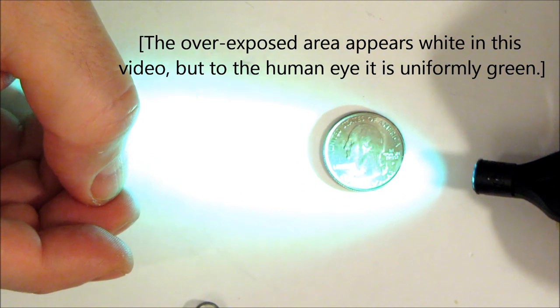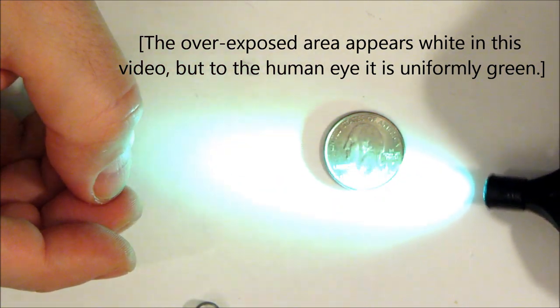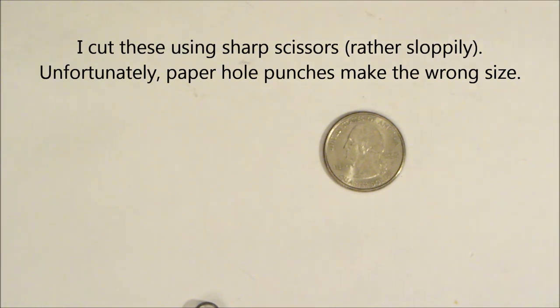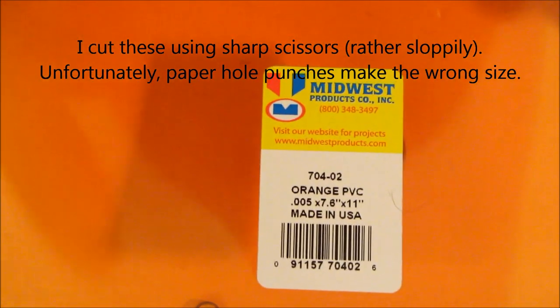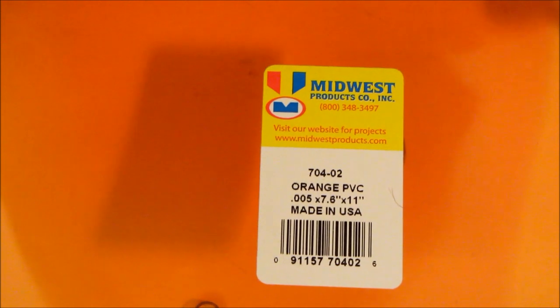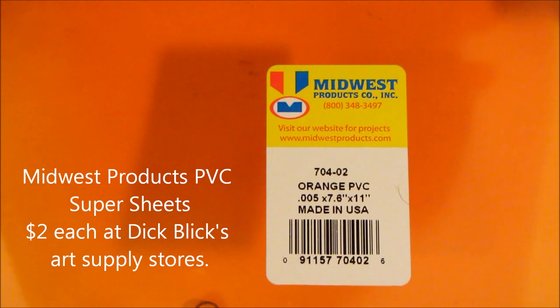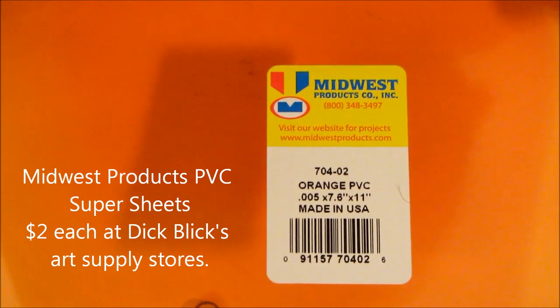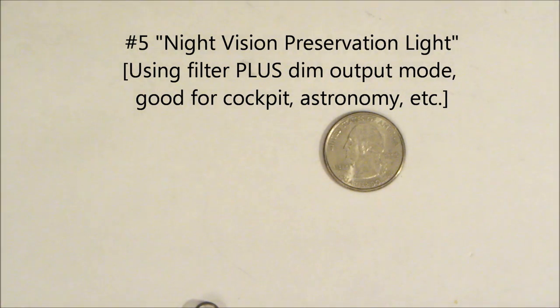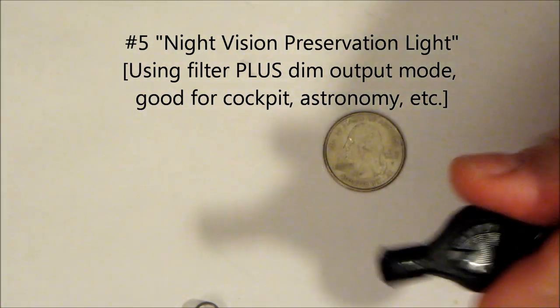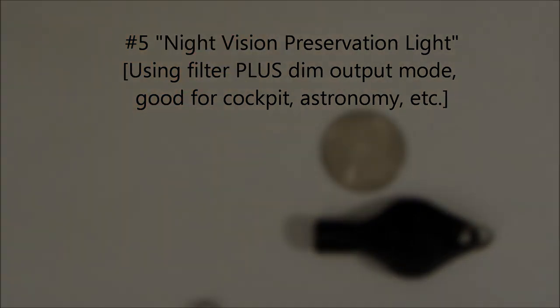So you can change whatever color you want. And the filters I'm using are...I'll show what they're made by. This is the company that makes them. I buy these at an art supply store. You have their name, address, and telephone number, and their web address, that is, if you want to buy it. And they come in various colors. This is orange. Red is good for night preservation, night vision preservation. So that's what the different color filters do.